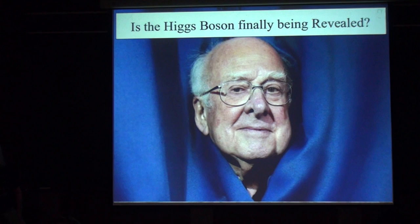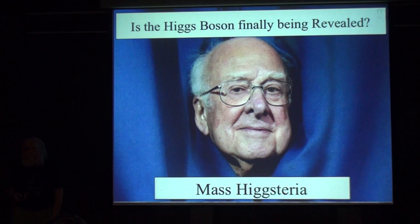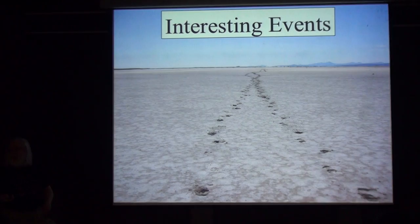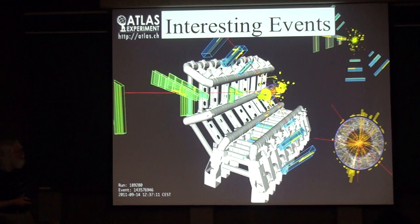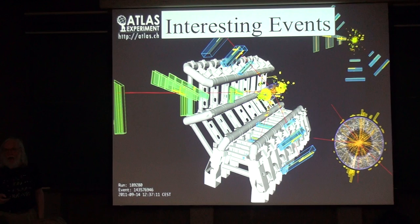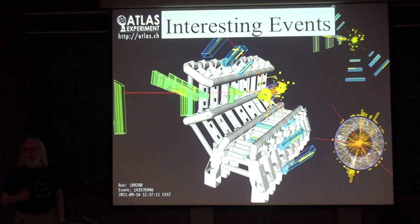Has the Higgs boson been discovered? There was an outbreak last July in the particle physics community of what can only be described as mass Higgs-teria. This was triggered by observations from both the CMS and Atlas collaborations of interesting events. Here's one example from Atlas: the Higgs decayed into four charged particles — two energetic charged particles going up and two more going down. This is exactly the sort of thing you'd expect a Higgs boson to do.